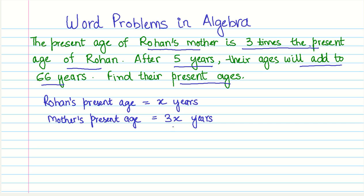But now we found out this relationship between their ages. But how about forming the equation? So we have this. After five years, their ages will add to 66 years. So we have a condition which says what is the sum of their ages after five years. Now, in problems of this type,